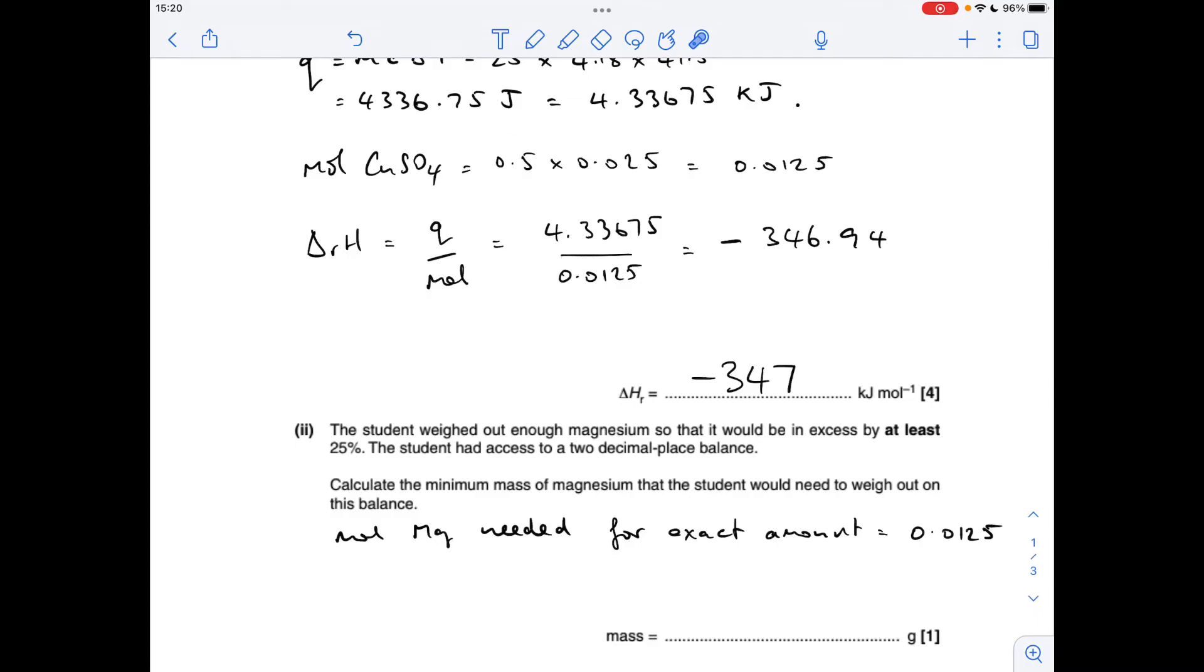So moving on to the next part, we've got to work out the minimum mass of magnesium needed so that it's in excess by 25%. We've also got to bear in mind that we're using a two decimal place balance. So the first thing I've worked out, or the first thing I've reminded myself about, is because they're reacting in a one-to-one ratio, we would need, if we were reacting the exact amount of magnesium, we'd need the same moles of magnesium as we've got of copper sulfate.